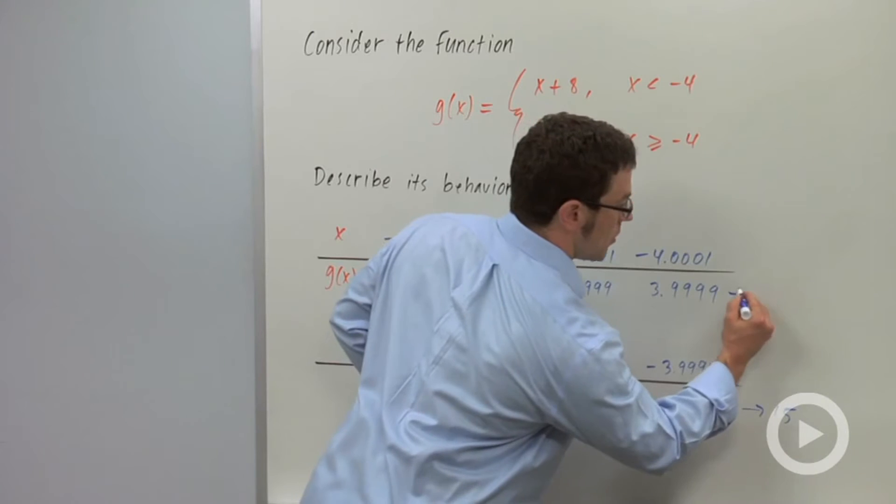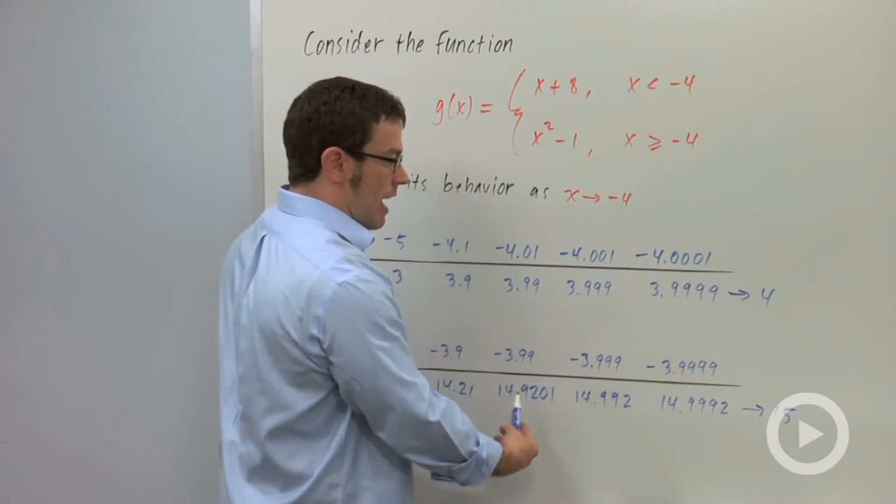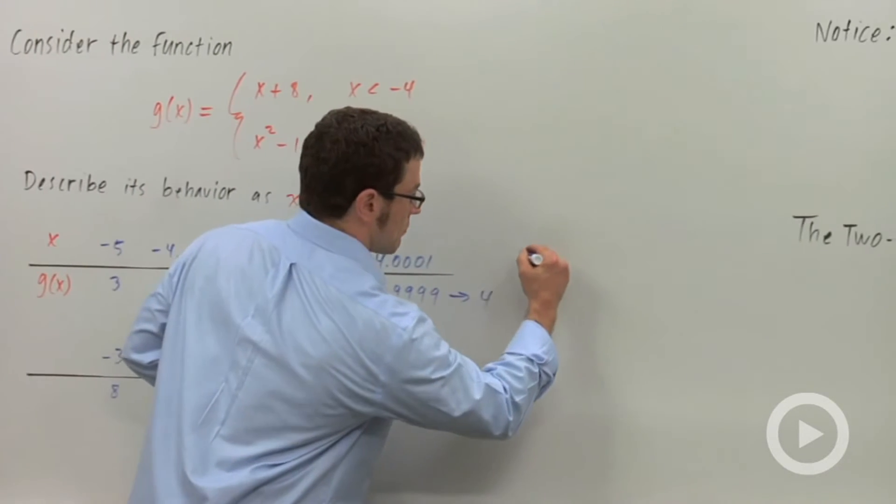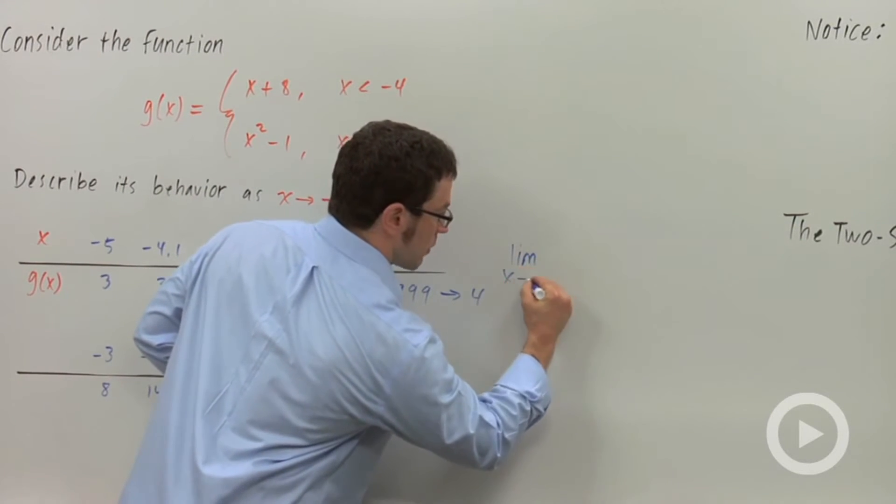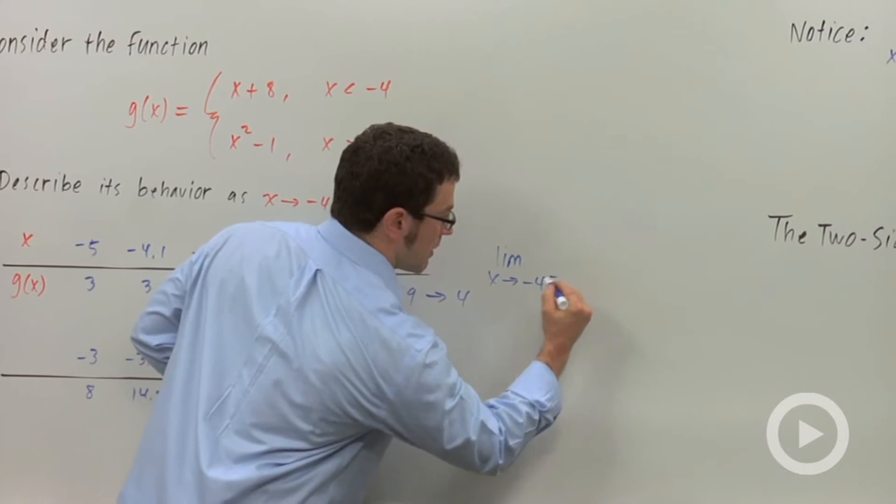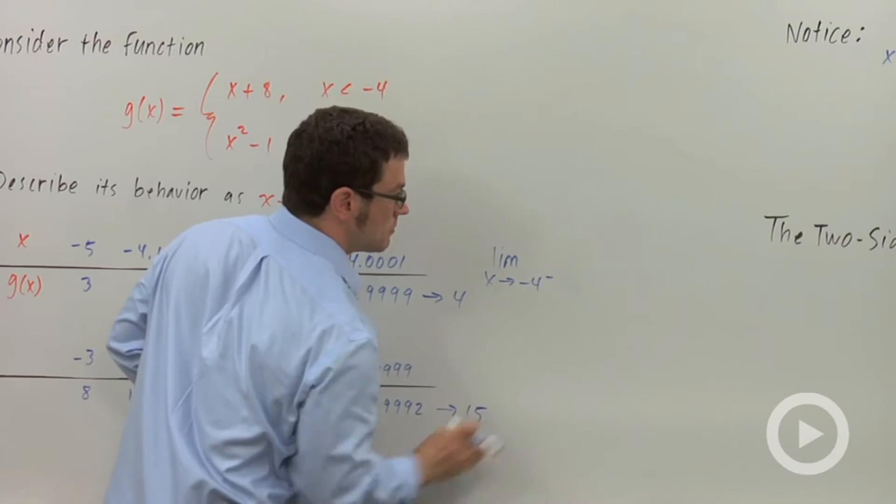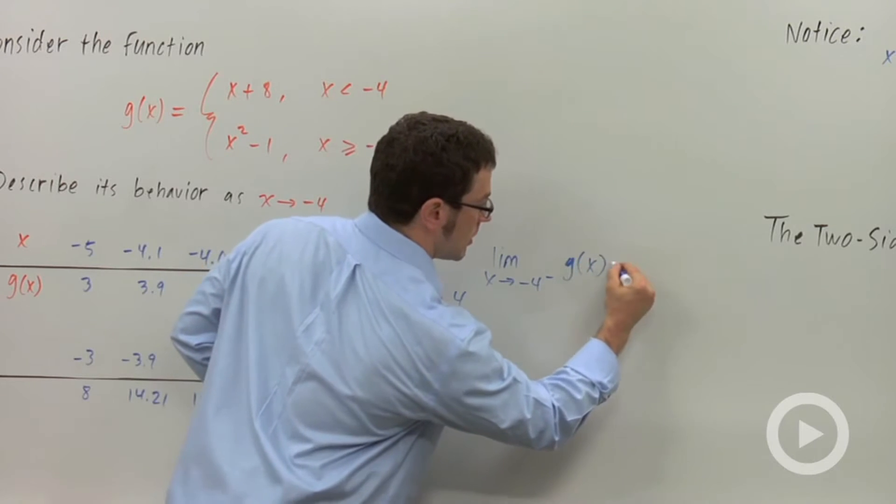Okay, so we're approaching 4 from the left and approaching 15 from the right. So here's what we say: we say the limit as x approaches negative 4 from the left of g of x is 4.